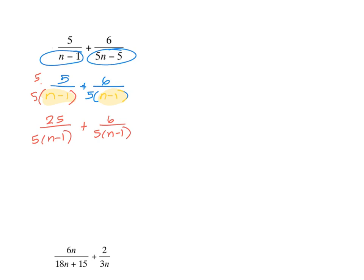We're going to combine our like terms. We always want to make sure our answer has the numerator and denominator as completely factored as possible before we say it's our answer, because sometimes it could simplify more. In this case, 31 doesn't have any common factors we could pull out — it doesn't divide by five, and there is no n minus one in the numerator. So this is our final answer.